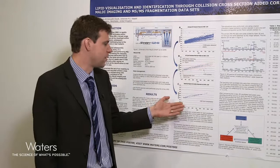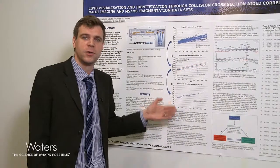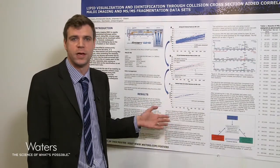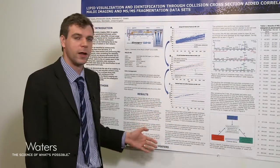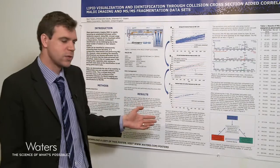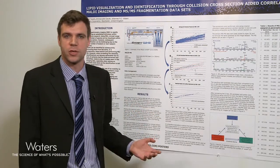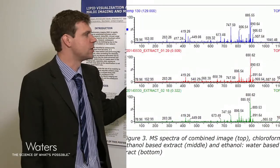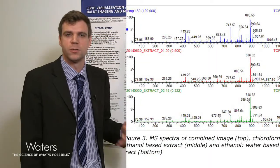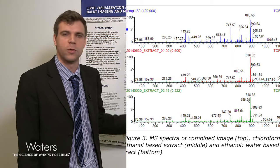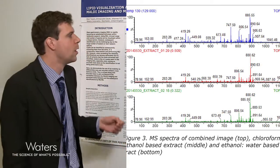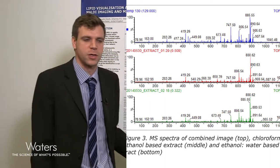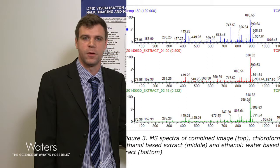This leaves us with 168 potential lipid candidates. We still don't know that these are definite lipids — all we have is the accurate mass information that indicates they probably are lipids. So next we took a consecutive tissue section and performed some extractions. For one section we used a chloroform-based extraction (chloroform:ethanol 2:1), and we also used a composition matching our matrix — 70% ethanol:water — but without the matrix.